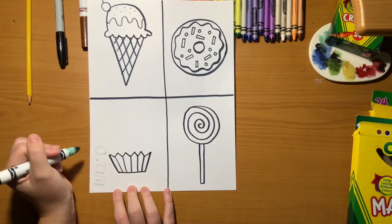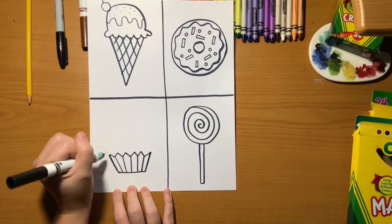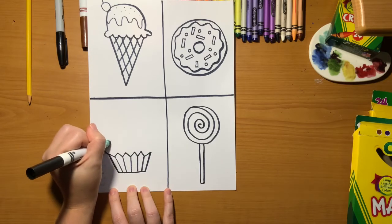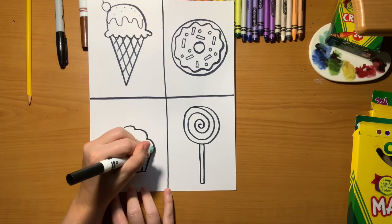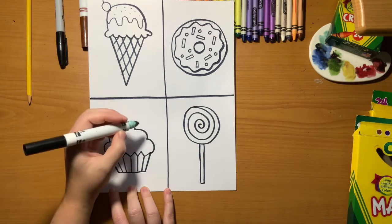Now for the top of our cupcake, there's a few different ways you can do it. You can make a bumpy line. You can make a straight curved line. I'm going to do a bumpy line all the way over, kind of like a cloud for our cupcake's icing.